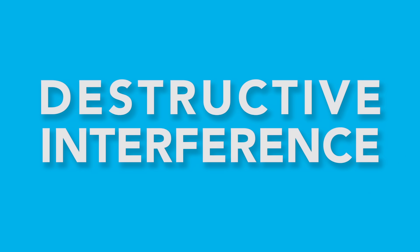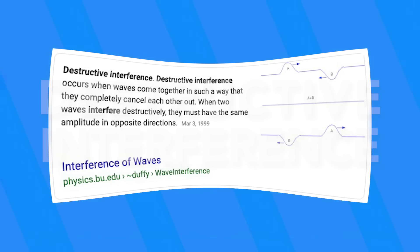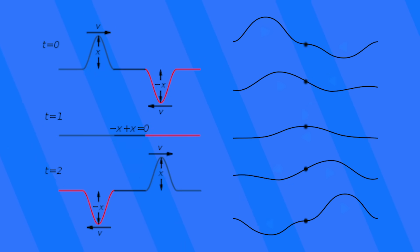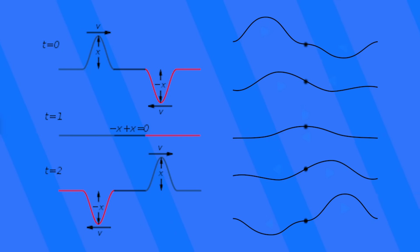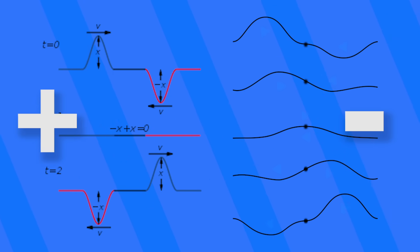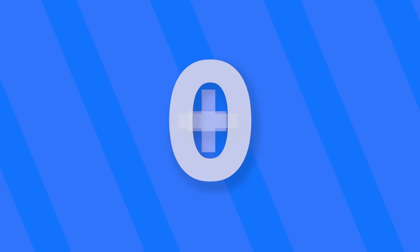In other cases, waves can cause destructive interference, which occurs when two waves collide with the crest of one wave meeting the other. This is essentially identical to how electronic waves work too. Thinking of it as positive and negative, when a positive crest meets a negative valley, they add up to zero — they cancel out.